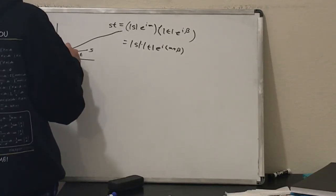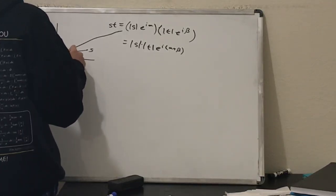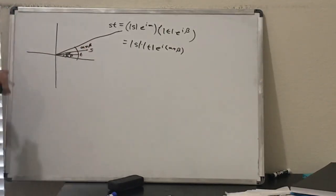So this is alpha, and then if this is beta, then this angle right here will be alpha plus beta. This whole angle of the multiplication of these two complex numbers.